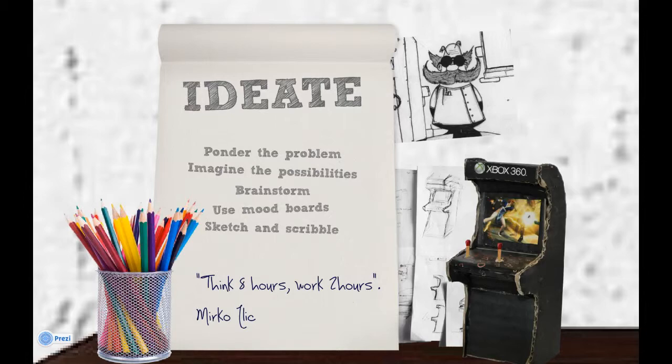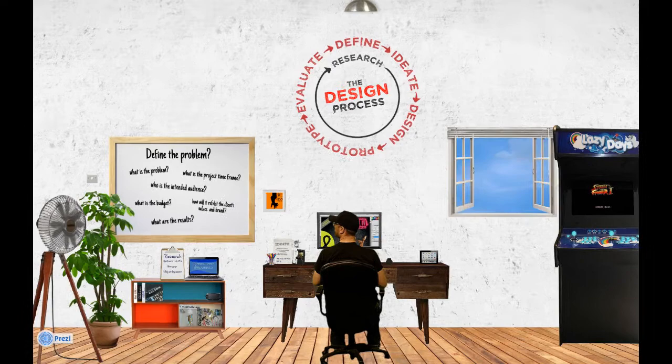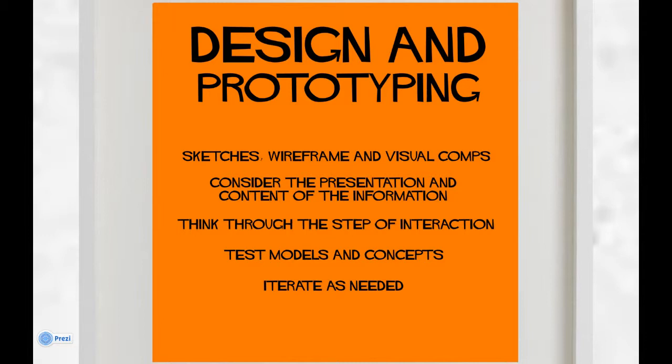After that, we go into the design and prototype phase. As Saul Bass said, design is thinking made visual. When designing and prototyping, we want to be using sketches, wireframes, and visual comps. We want to be thinking about the presentation and content of information, how the user is going to interact with our products, and testing that on people. We need to be testing models and concepts and iterating as needed — an iteration is a constant evolution of your designs.